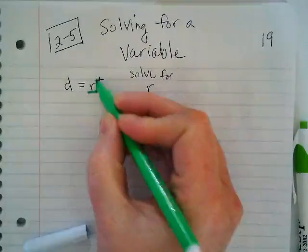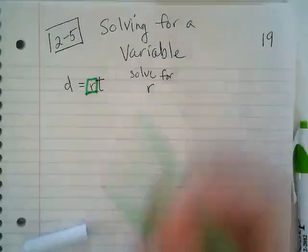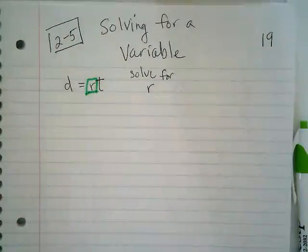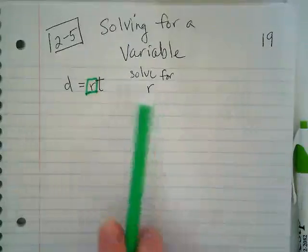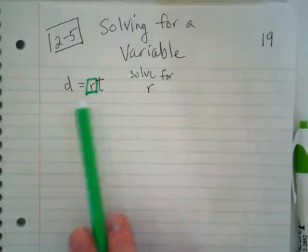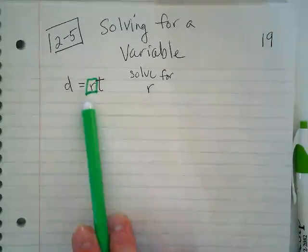I like to put a box or circle, or even just sometimes underline our target. We've been asked to solve for R. That means we need to get R on one side of the equal sign all by itself.